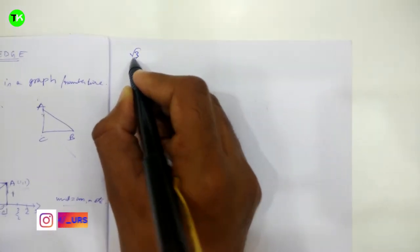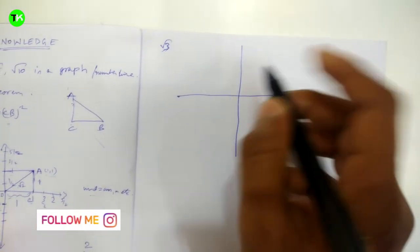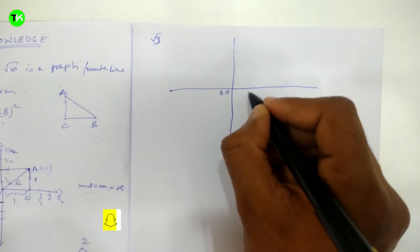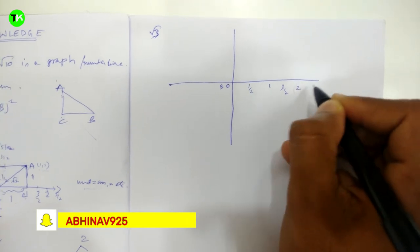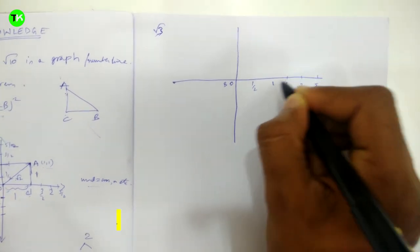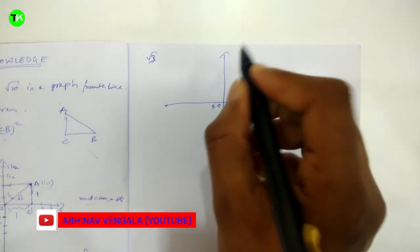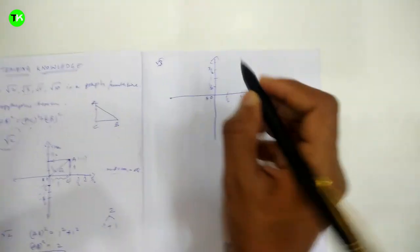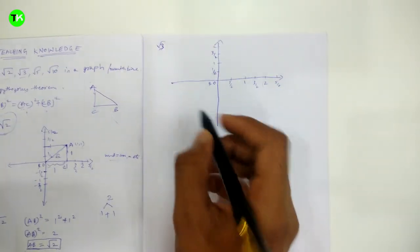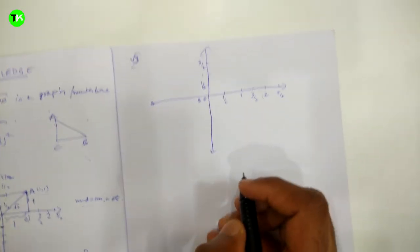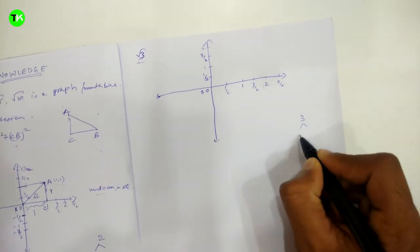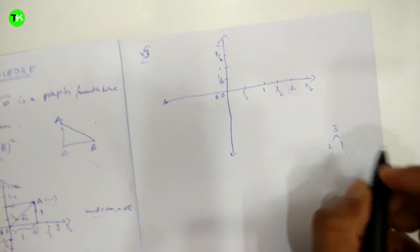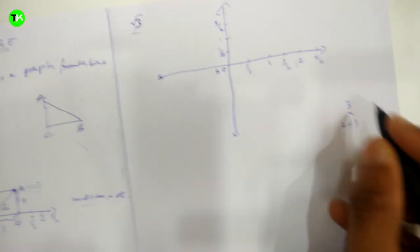For root 3, let the center point be O (or B). Mark points on the x-axis: half, 1, 3/2, 2, 5/2, and on the y-axis: half, 1, 2. For root 3, we use 2 + 1 = 3, since those are the only values that give us the sum of 3.